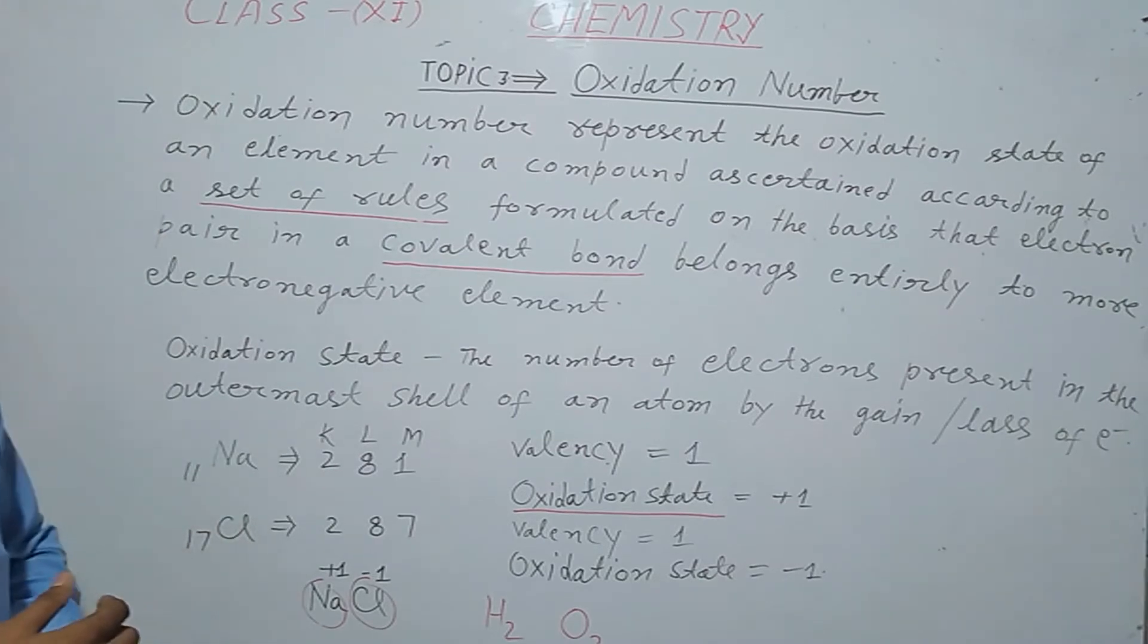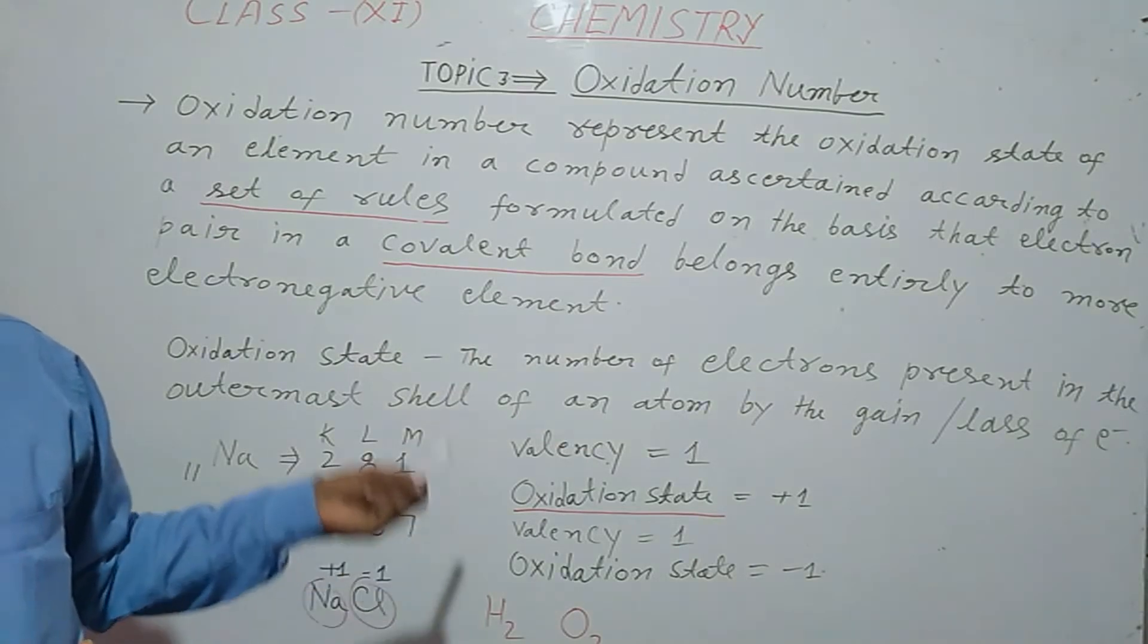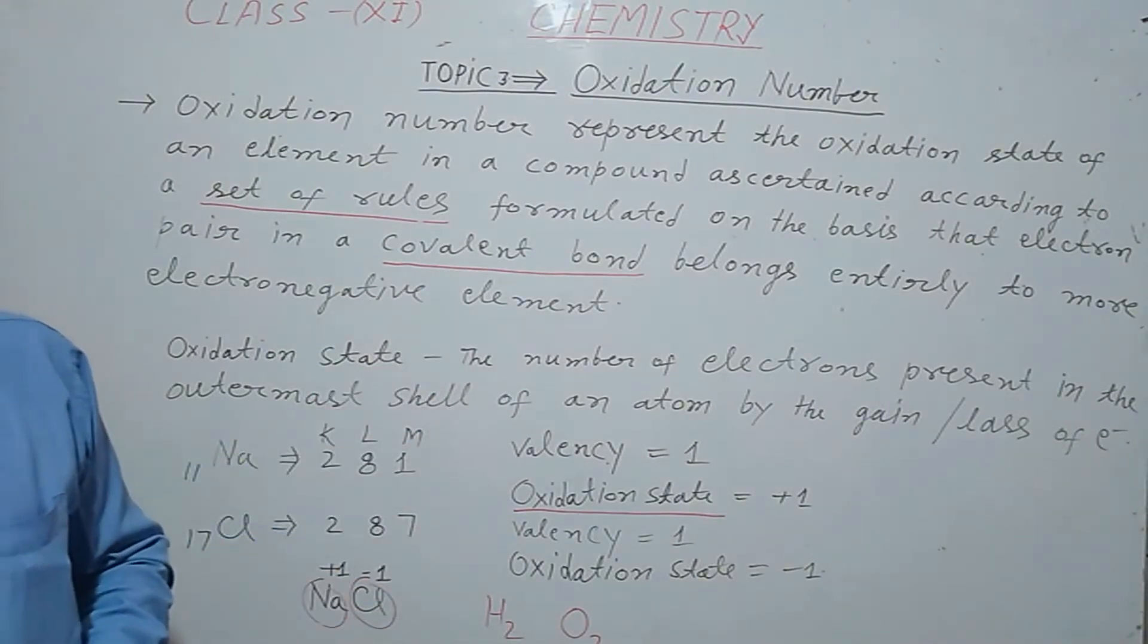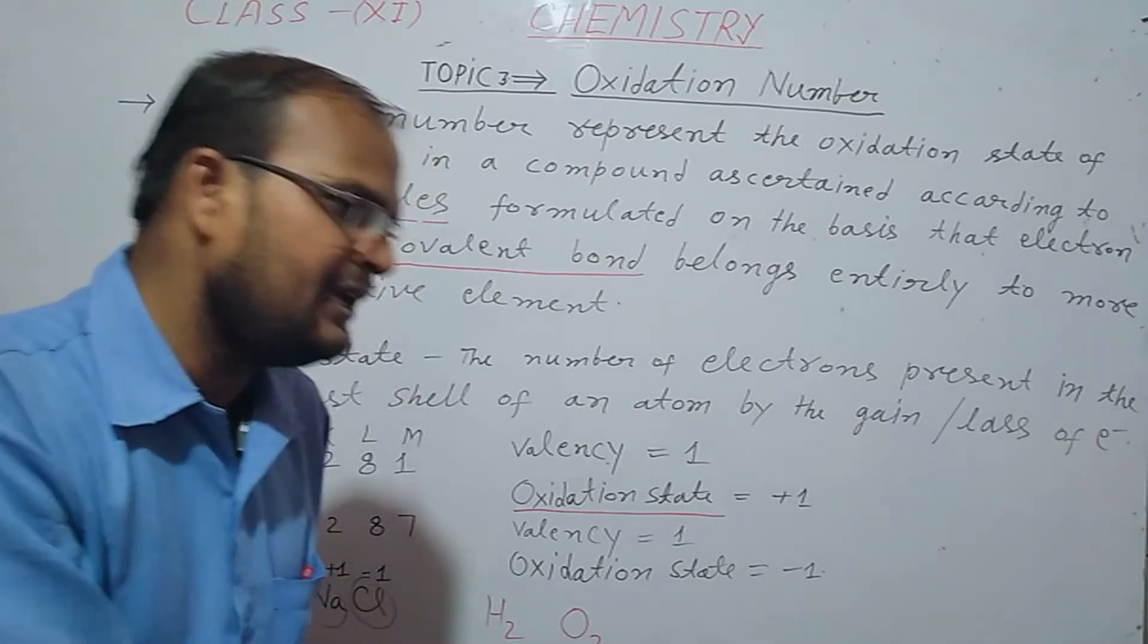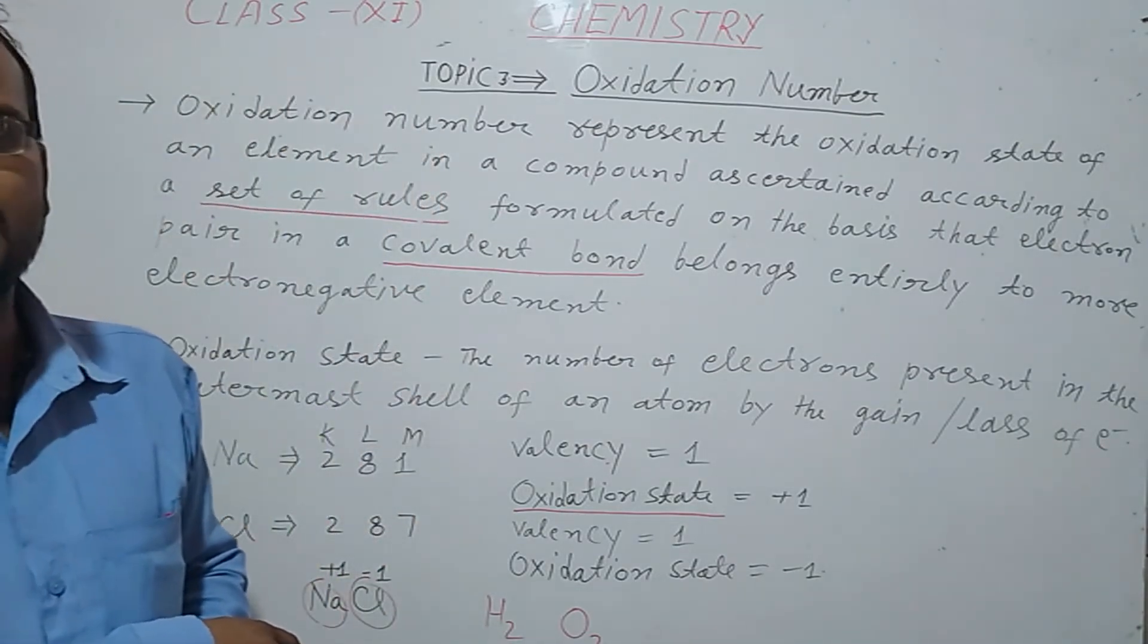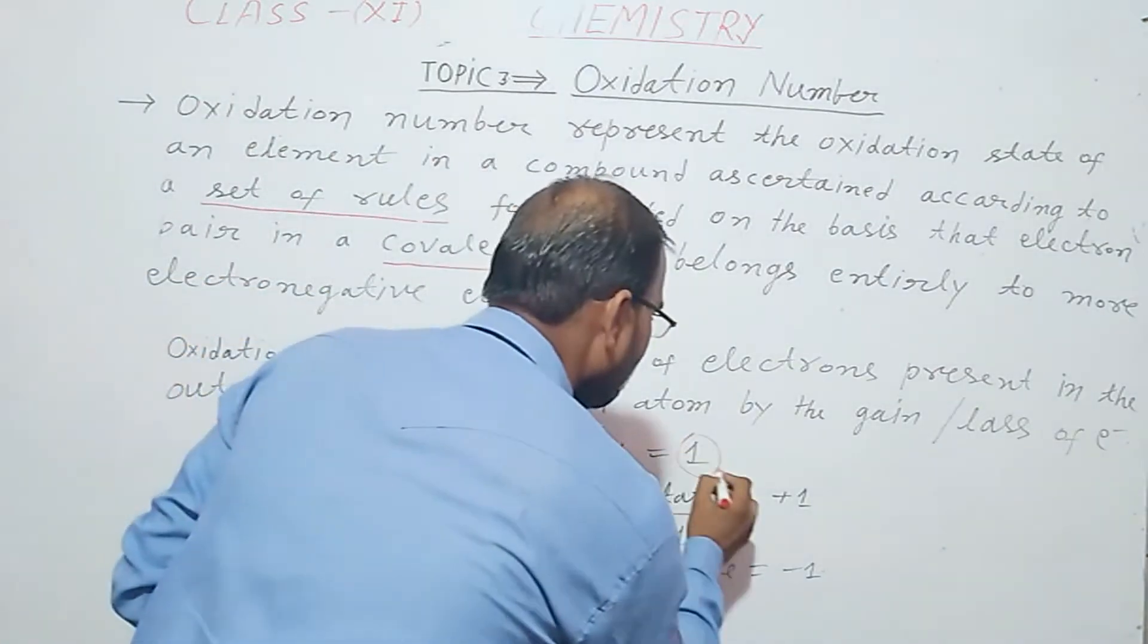Oxidation state can be positive like plus 1, plus 2, plus 3, plus 4. It can be negative like minus 1, minus 2, minus 3, minus 4. It can be zero. Oxidation state is a whole number and can be fractional number like 1 by 2, 3 by 2, 4 by 3.